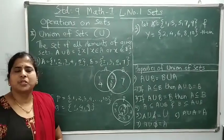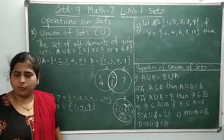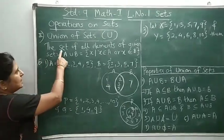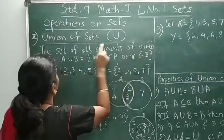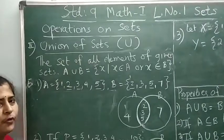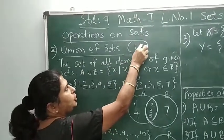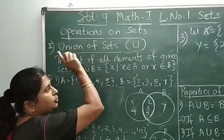Let's see another operation on sets: union of a set. What is union of a set? The set of all elements of given sets is called union of set and shown by the letter U. U stands for union.